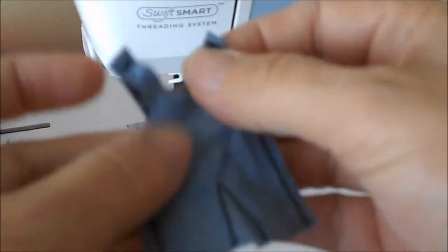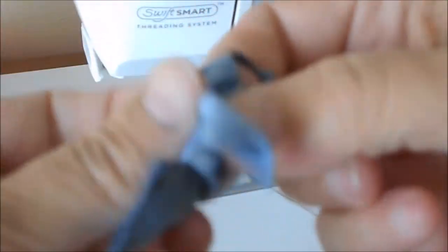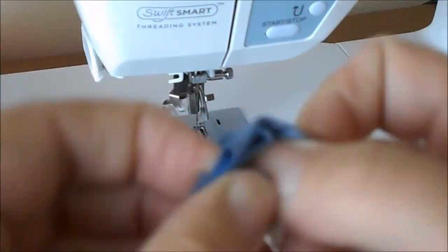After you cut it out, it's time to turn it right side out and then we'll roll little cuffs into the pant legs.